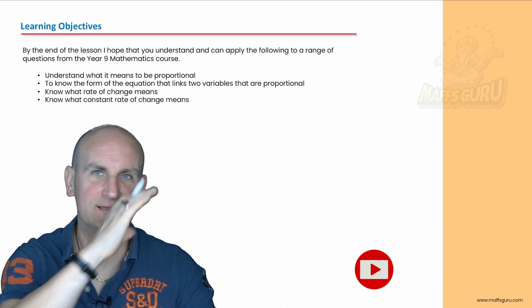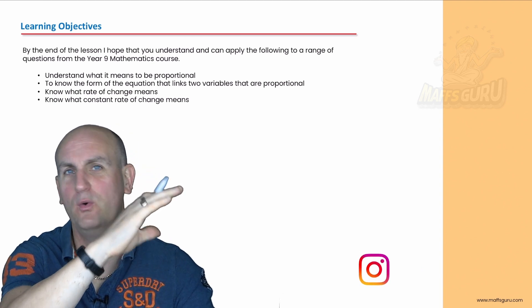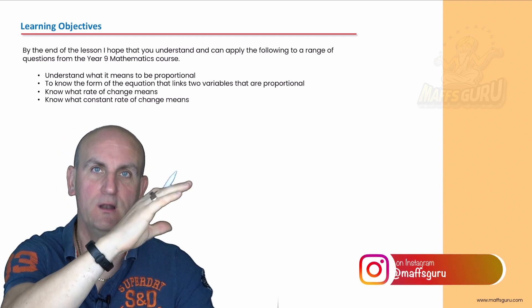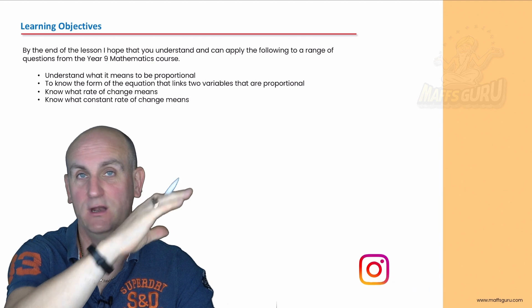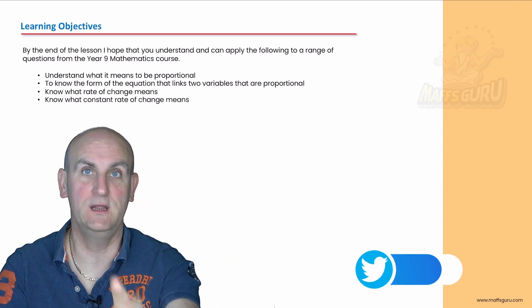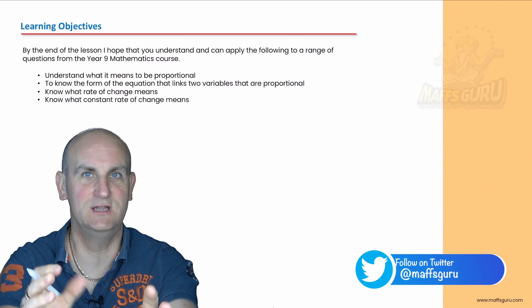Yes, direct proportion basically means gradients are equal all the way along the line or that the line is flat, it's a straight line. Stop the video. No, don't stop the video. I've got examples, I've got humour, stick with me.